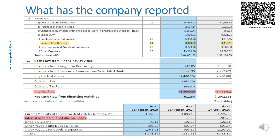The slide shows an extract of the expenses reported in the statement of profit and loss, an extract of the cash flows from financing activities reported in the statement of cash flows, and note 17 on other current liabilities. The aggregation of the liabilities as other current liabilities is an issue; however, we are not discussing the same in this video.